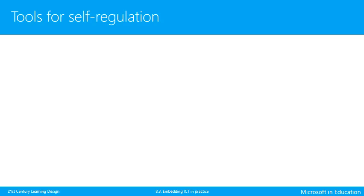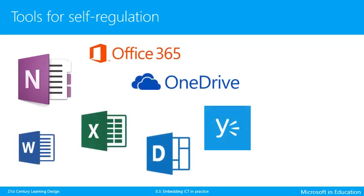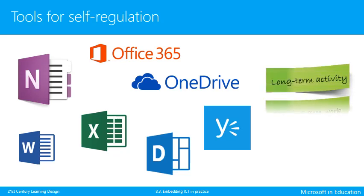When it comes to the development of self-regulation, students could use tools such as OneNote, Word, Office 365, OneDrive, Excel and Yammer to organise their learning over a long-term activity, plan their work throughout the learning activity, as well as revising their work based on feedback from their teacher, their peers or outside experts.